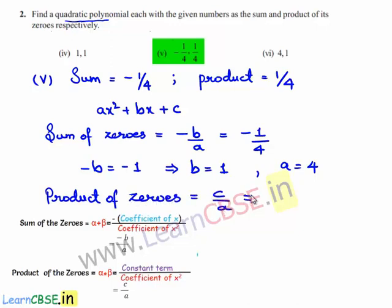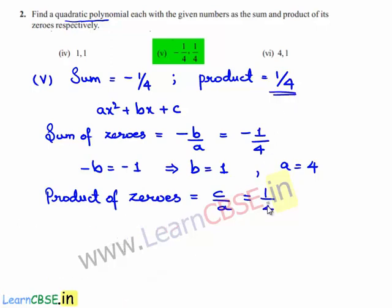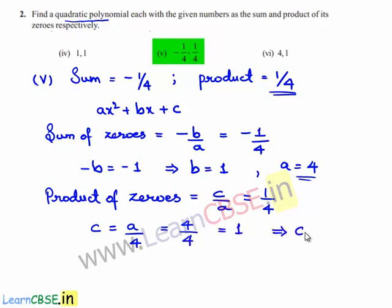We know that the product of zeros is equal to c/a, and the given product is 1/4. So c = a/4 by cross multiplication. Since a = 4, c = 4/4 = 1. Therefore c = 1. Finally, a = 4, b = 1, and c = 1.